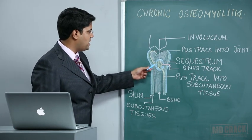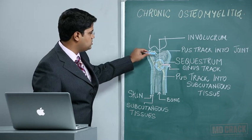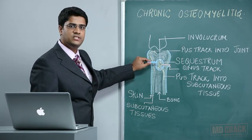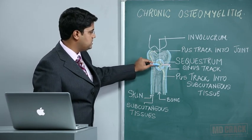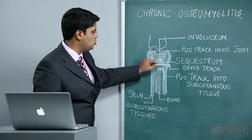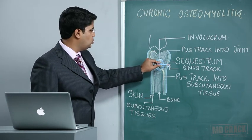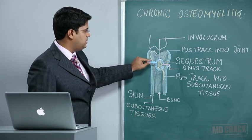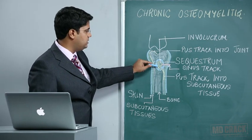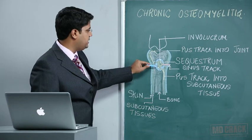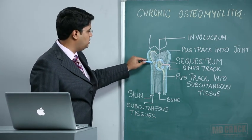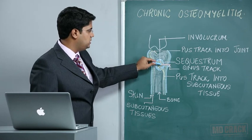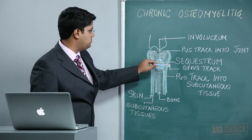In the diagram of chronic osteomyelitis, this is the knee joint, the skin, the subcutaneous tissue, and the intramedullary region where the osteomyelitis is located. The sequestrum — dead bone — is formed here, and a sinus tract goes from the intramedullary region toward the subcutaneous tissue and skin. The infection can track through the medullary canal, into the joint, or to the skin via a sinus tract.